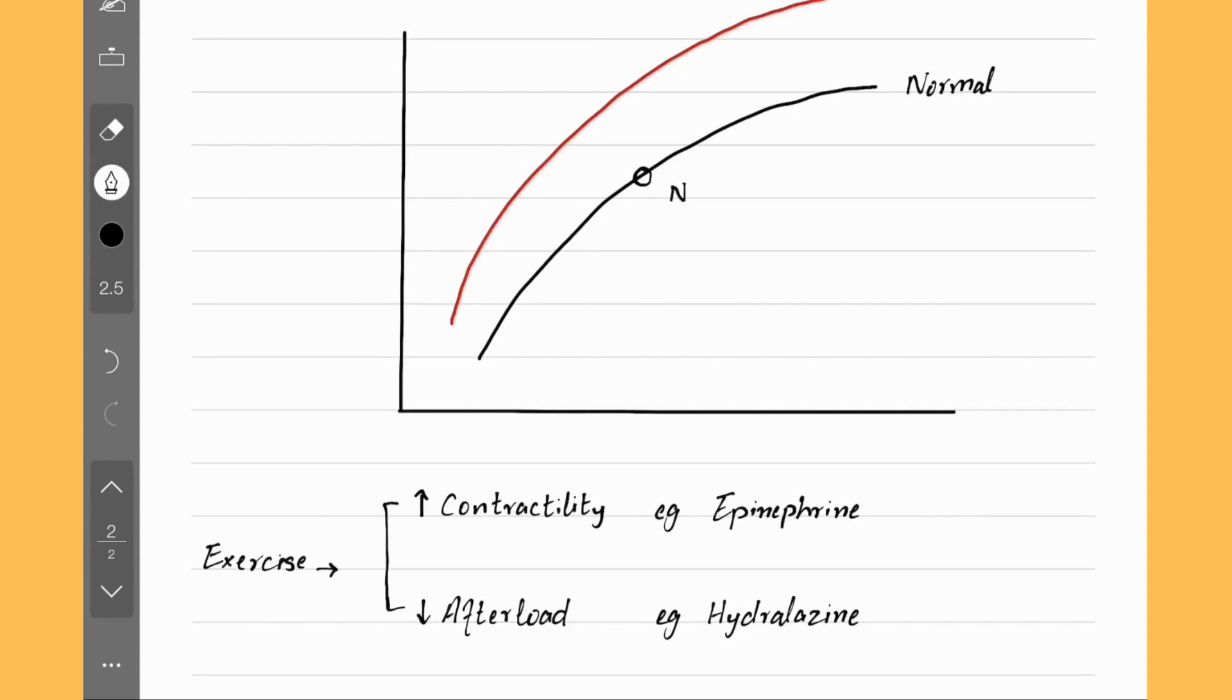Exercise changes both of them. It increases contractility and decreases the afterload by dilating the arteries feeding the muscles. So exercise, epinephrine and hydralazine all shift the curve up such that cardiac output is increased at all points along the curve compared to normal for the same amount of preload.